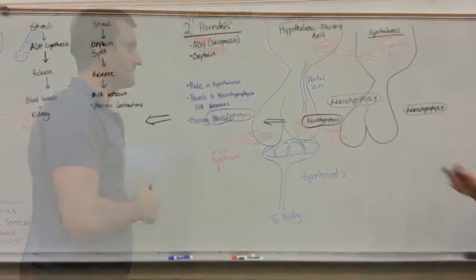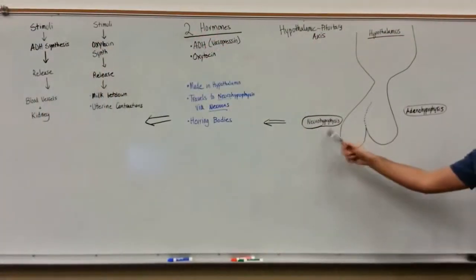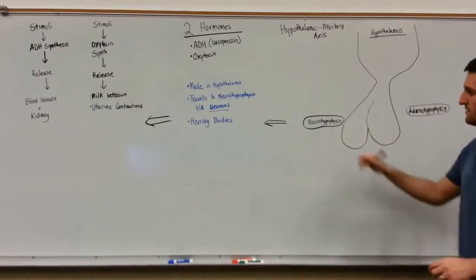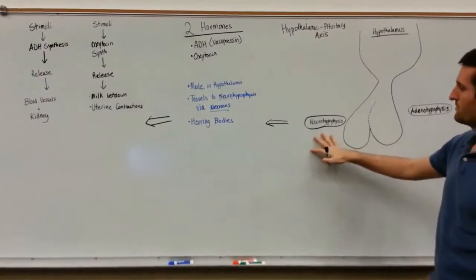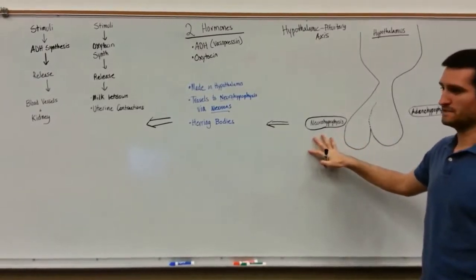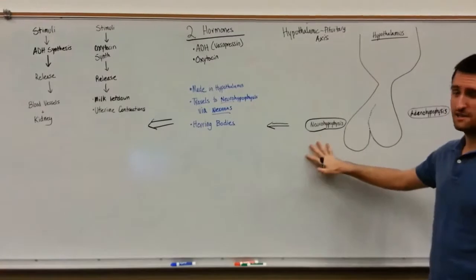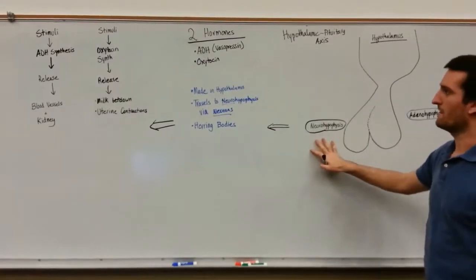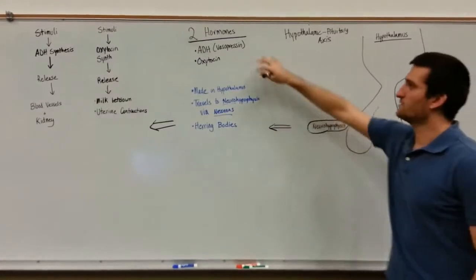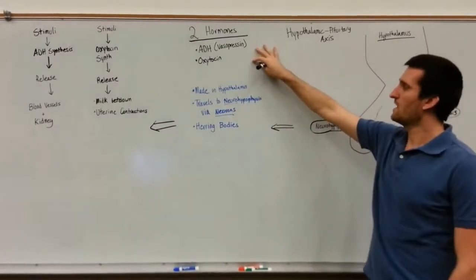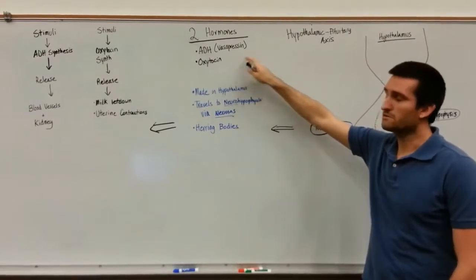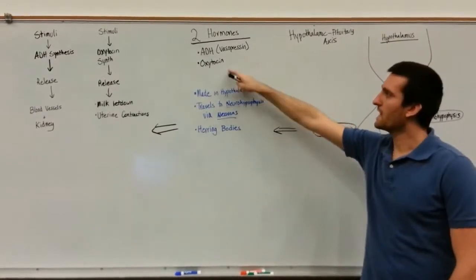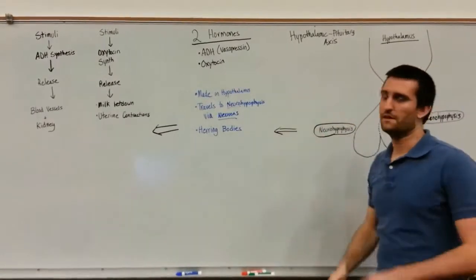So let's take a deeper look at the hormones produced by the neurohypophysis. The hormones of the neurohypophysis are actually not made within the neurohypophysis. You have two hormones: antidiuretic hormone, also known as vasopressin, and oxytocin.